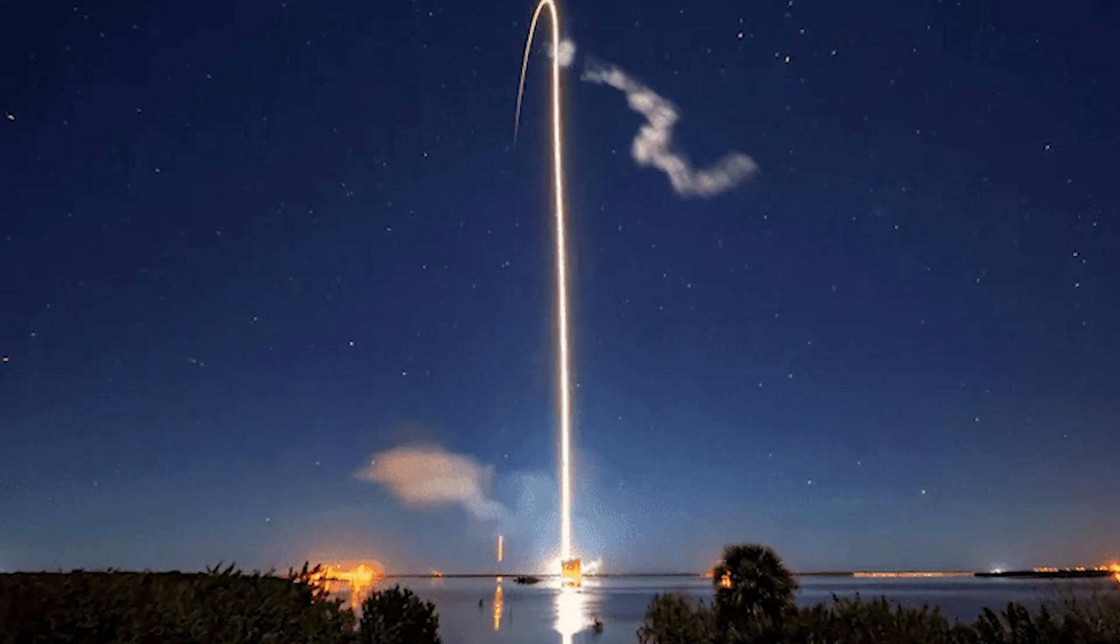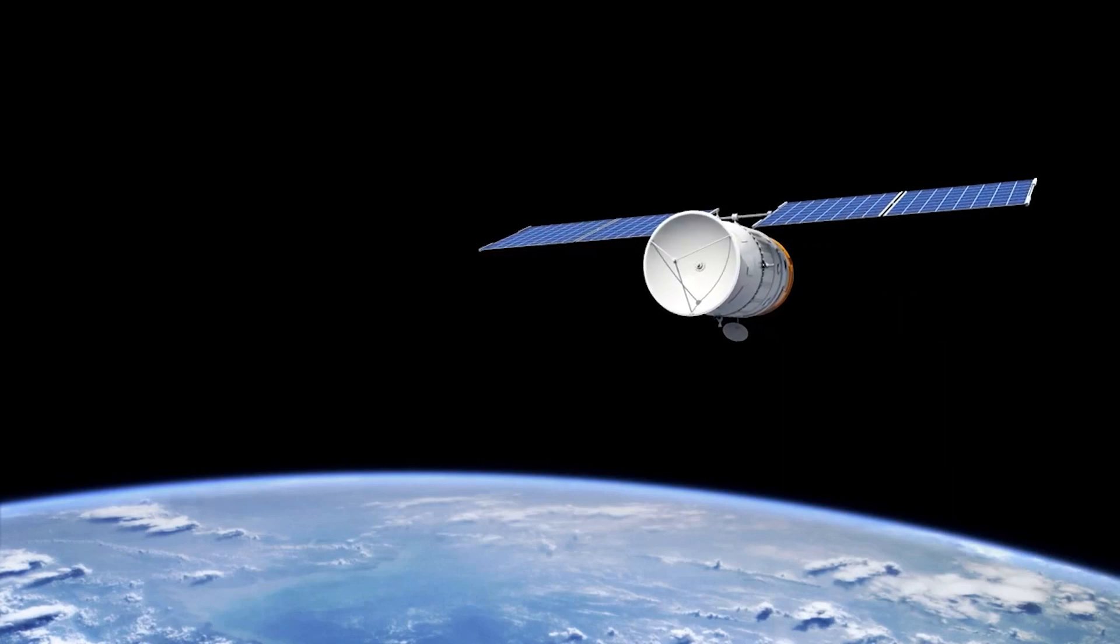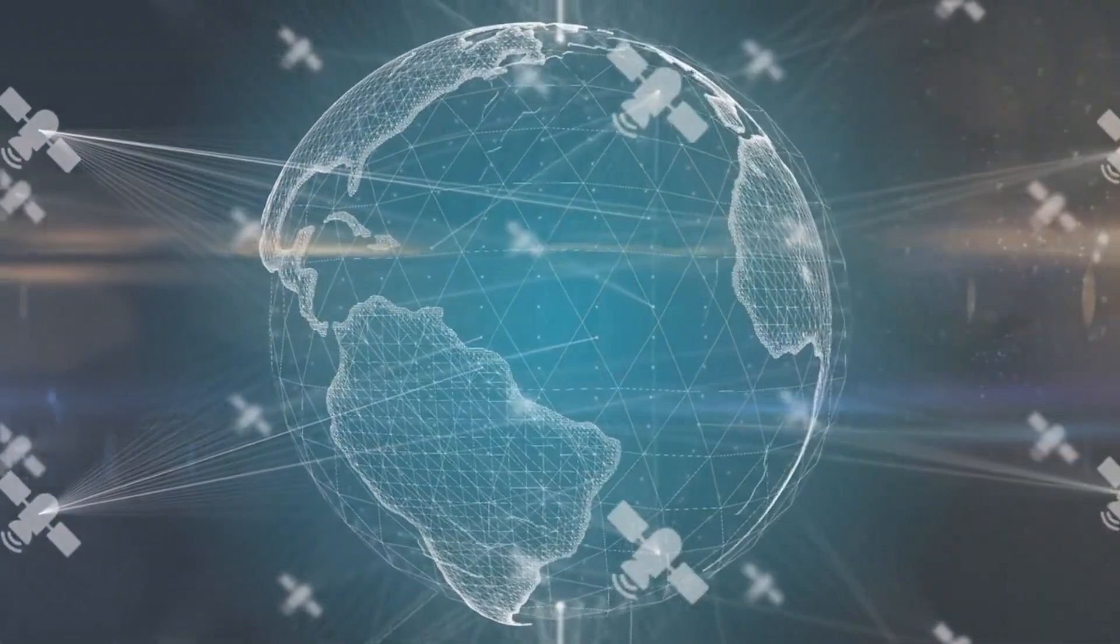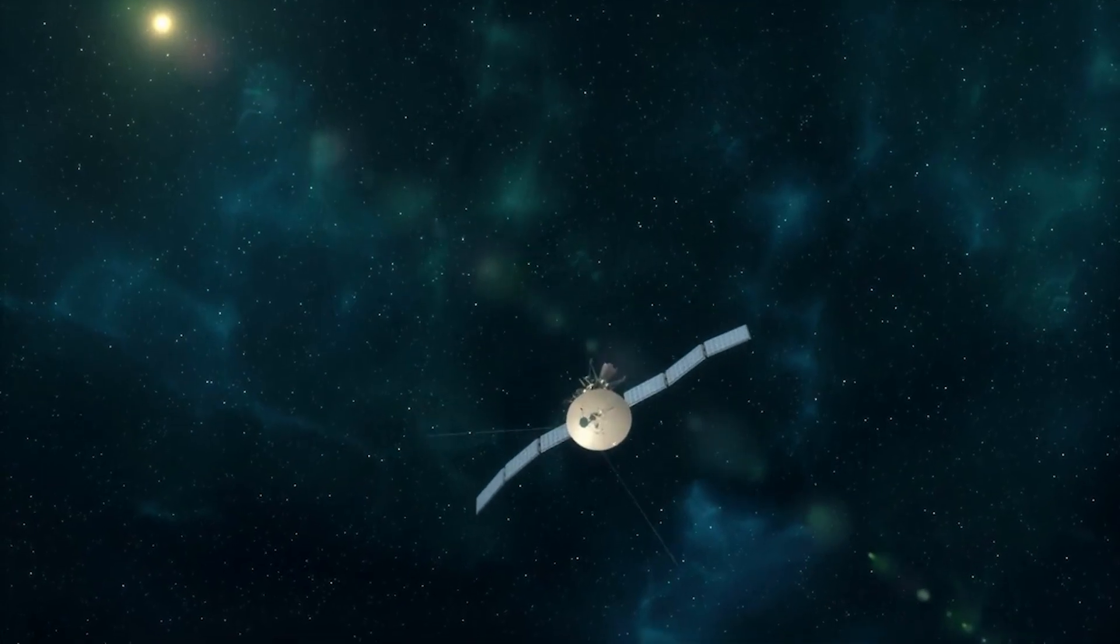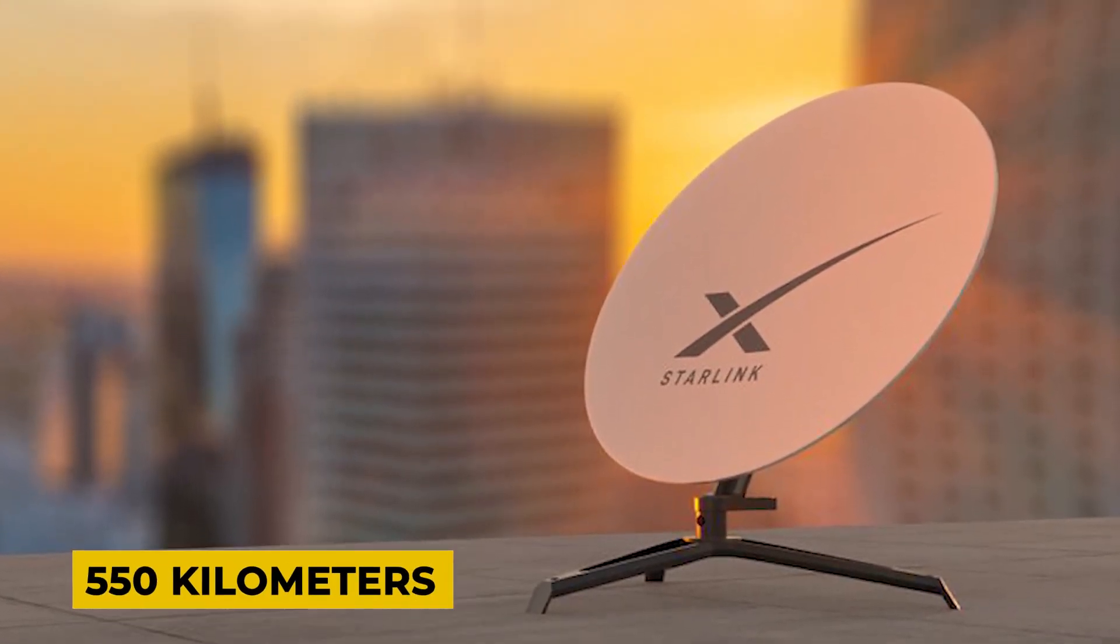One of the key advantages of Starlink lies in its strategic choice of low-Earth orbit for its satellite constellation. Unlike traditional satellite systems that operate in higher geostationary orbits, Starlink satellites orbit much closer to Earth, at an average altitude of about 550 kilometers.